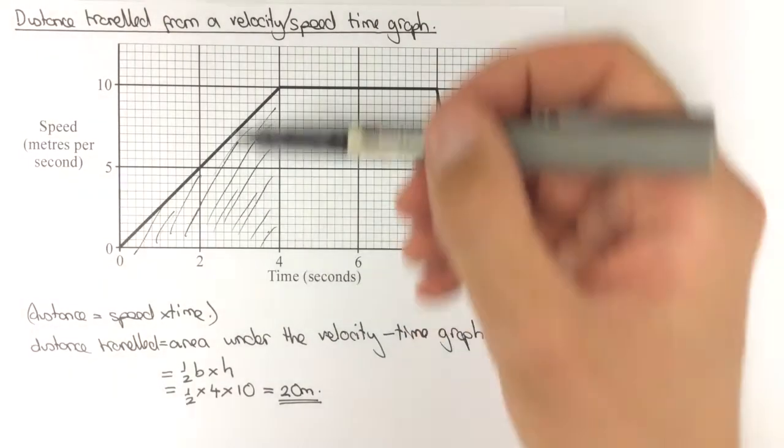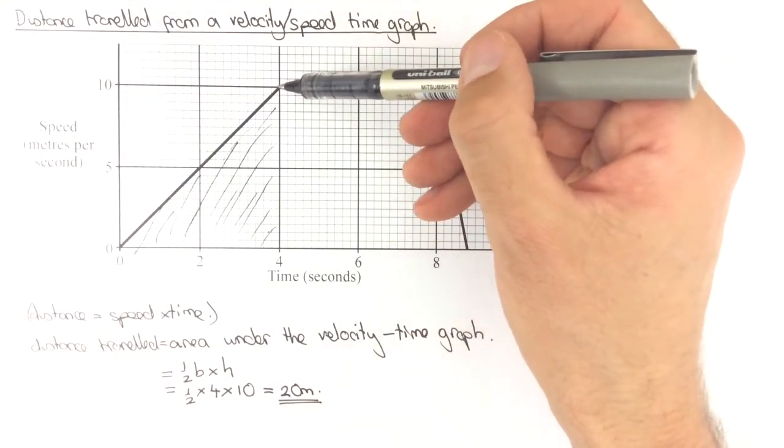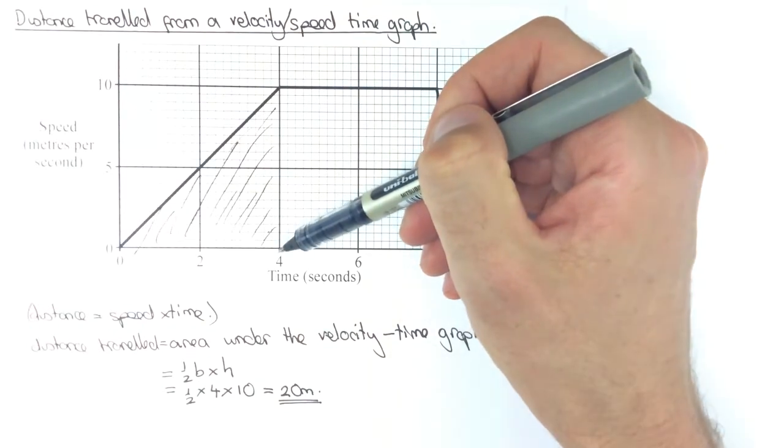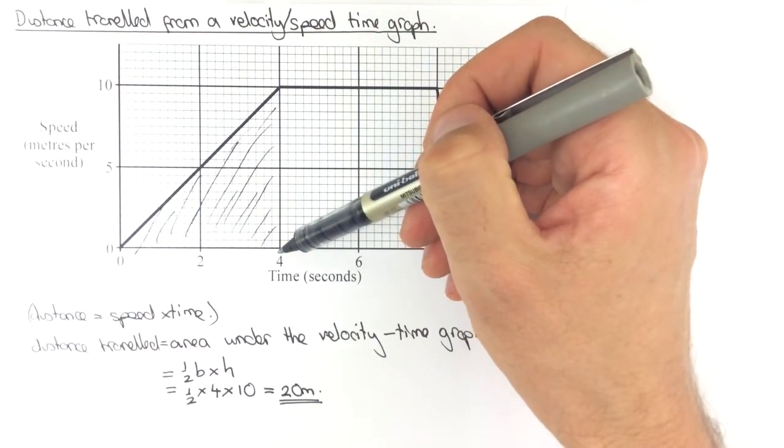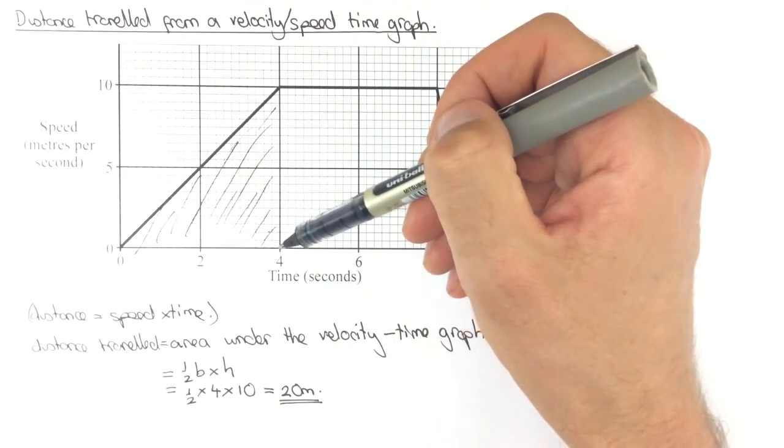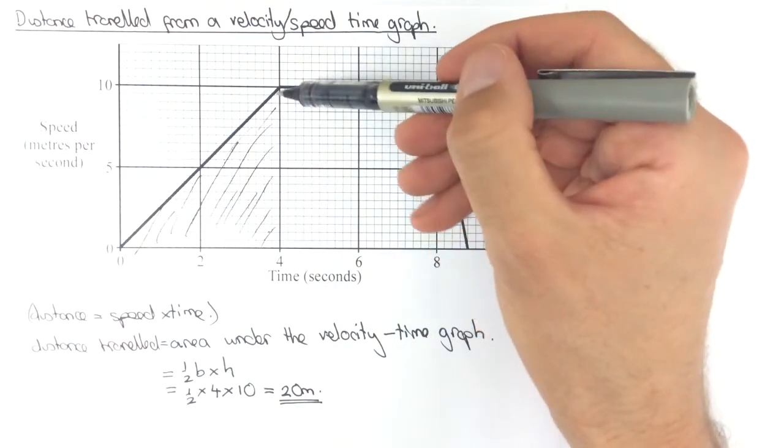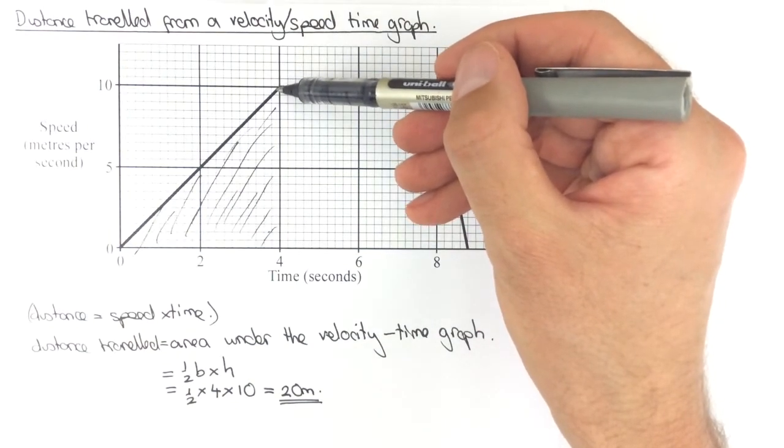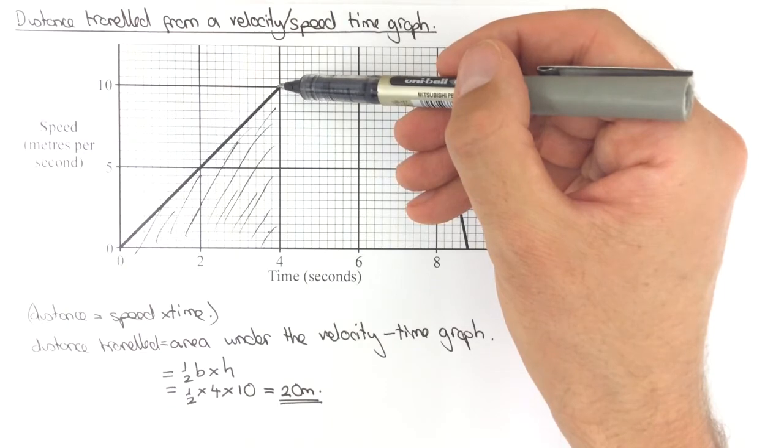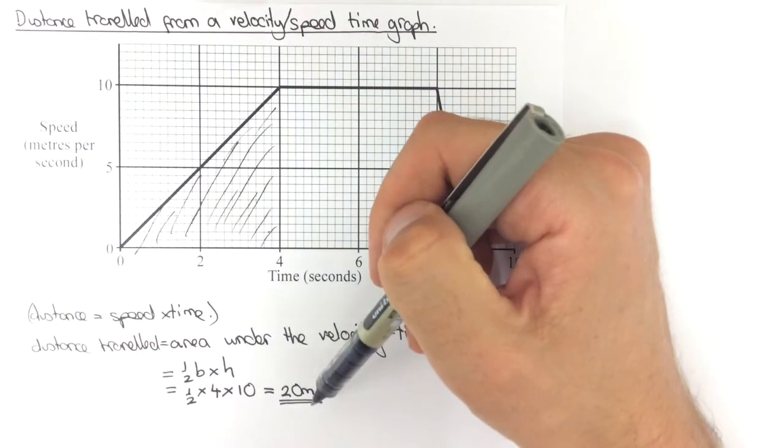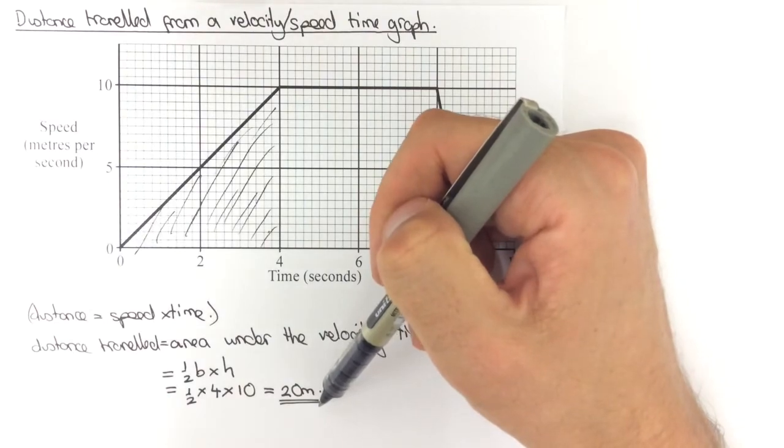If we had incorrectly just done the final speed times the final time, that would imply forty metres have been travelled. We can understand why that would be wrong because it's only travelling at ten metres per second right at the end, so it must have travelled less distance than forty metres, and the distance it's travelled works out as twenty.